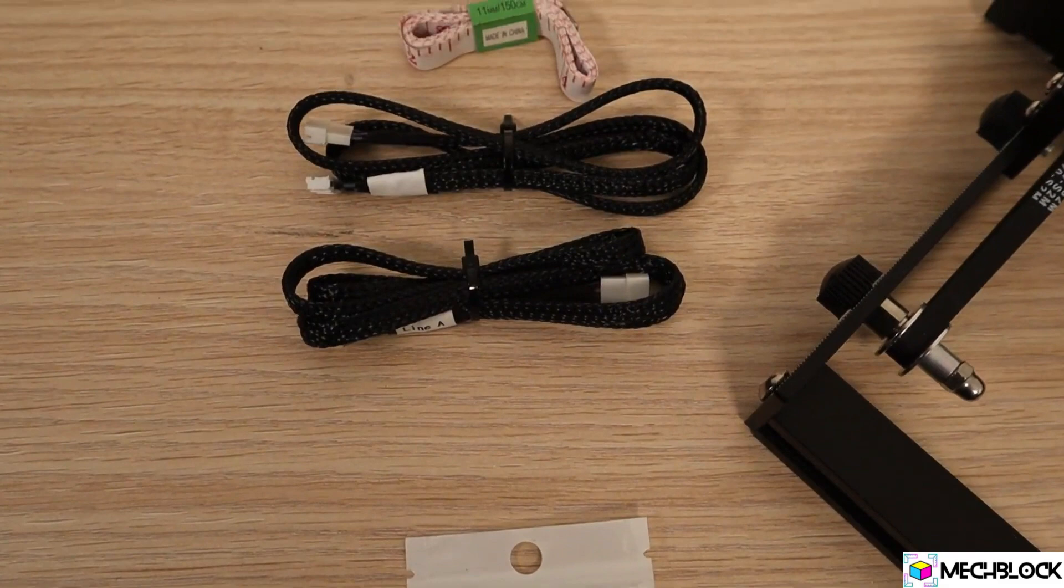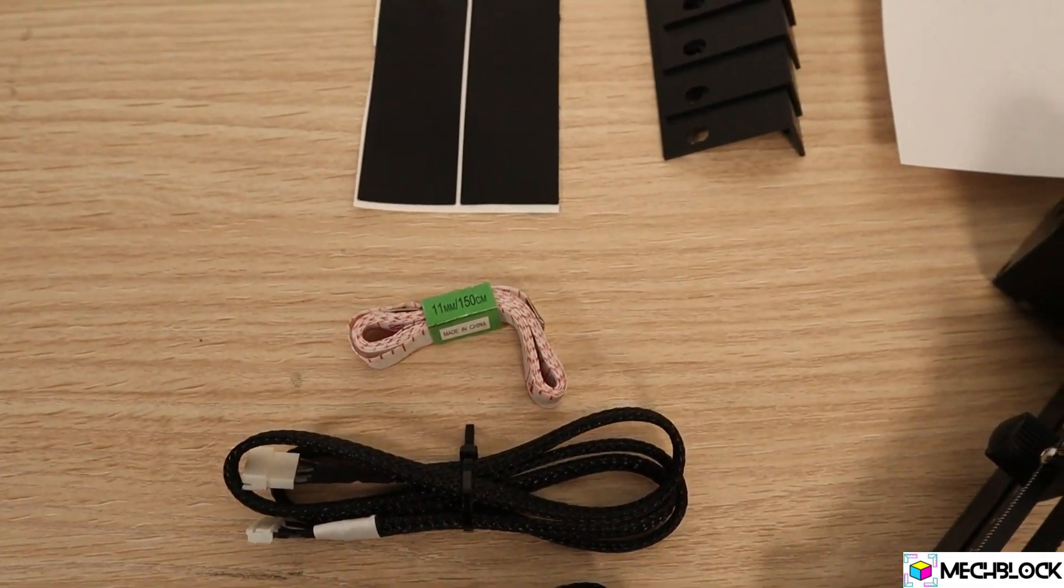In the package you also get the wiring harness, a tape measure, rubber feet, and razor feet for the machine.